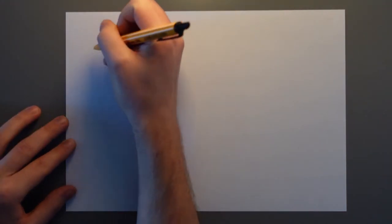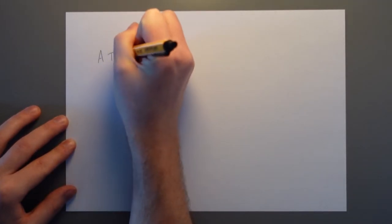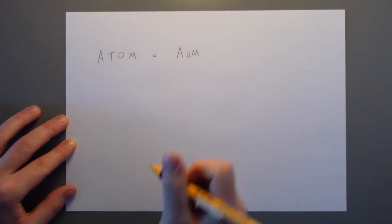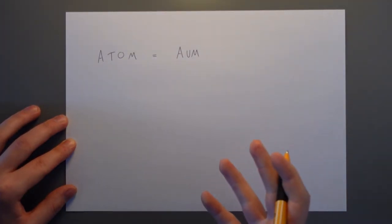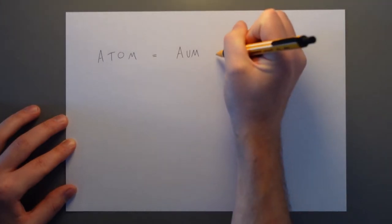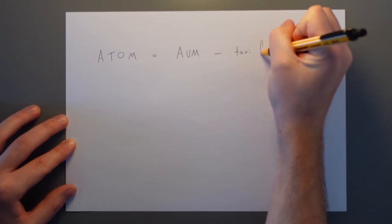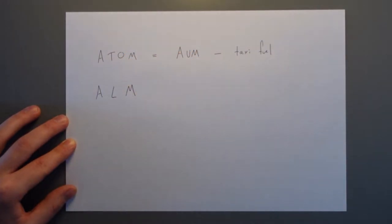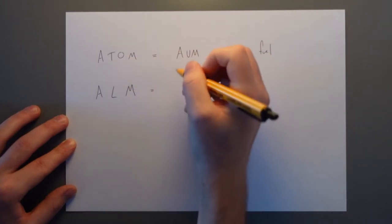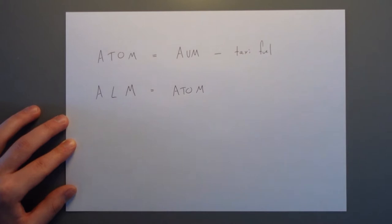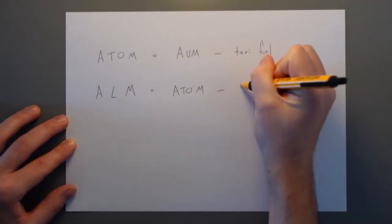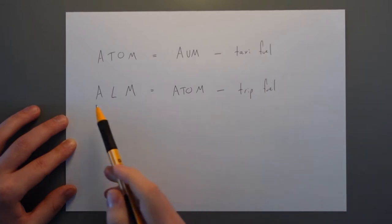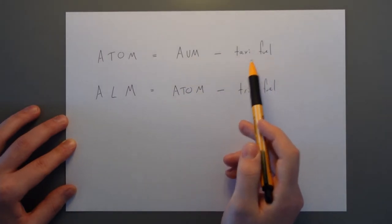Takeoff mass, or the actual takeoff mass, is defined by taking our all-up mass and then subtracting whatever fuel we would have used by the time we take off, which is our taxi fuel. Our actual landing mass is defined by taking that actual takeoff mass and then subtracting the fuel that we would have burnt by the time we land, which is our trip fuel. So actual landing mass equals all-up mass minus taxi fuel minus trip fuel.